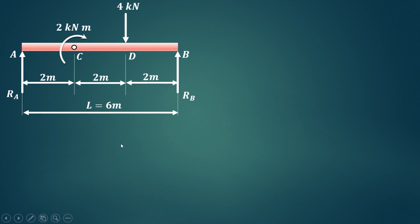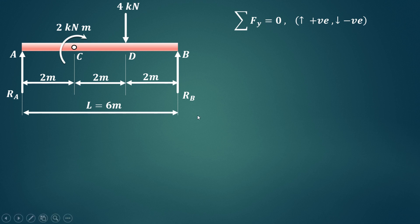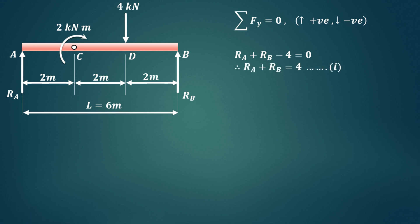First we want to find out reactions Ra and Rb by applying the conditions of equilibrium. The first condition is summation of forces in the y direction equals 0, considering upward forces positive and downward forces negative. Ra and Rb act upward and the 4 kN force acts downward, so Ra plus Rb minus 4 equals 0, giving Ra plus Rb equals 4.